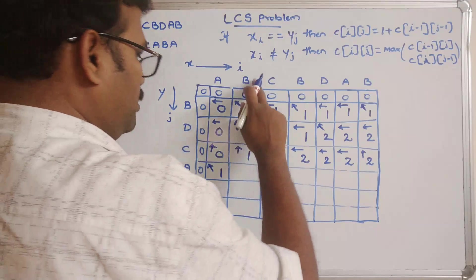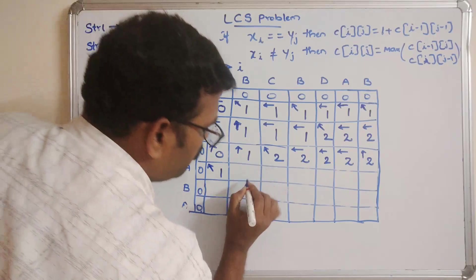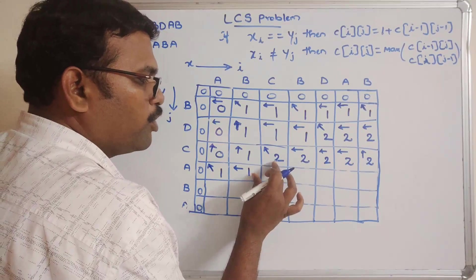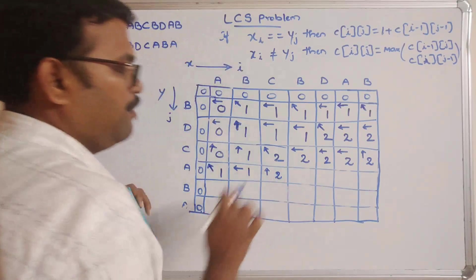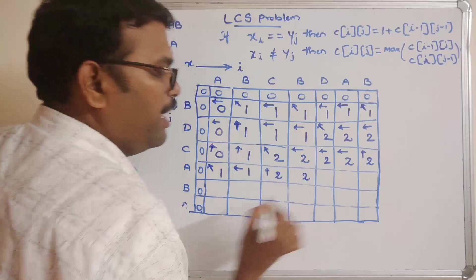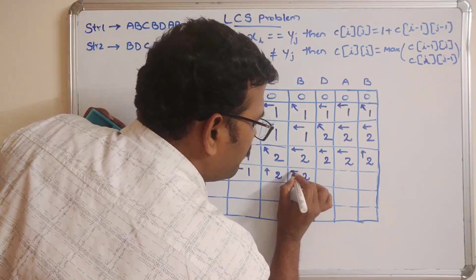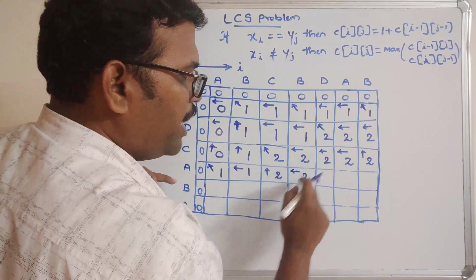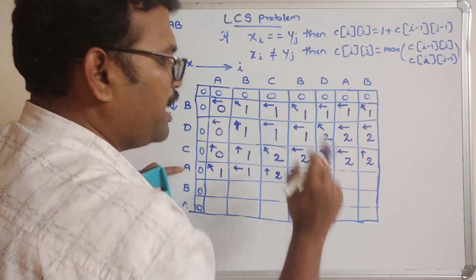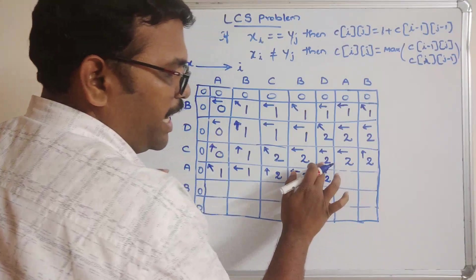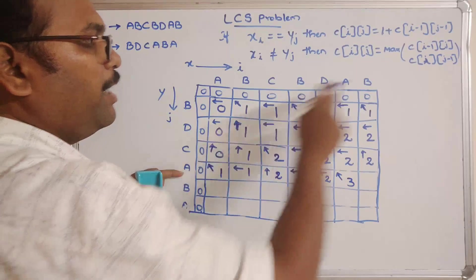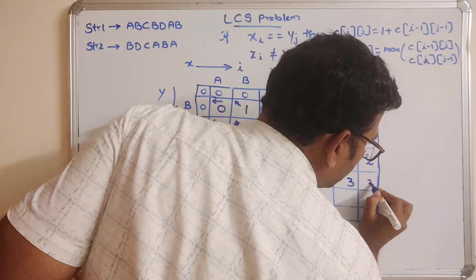A and B are unequal — one and one diagonally; both equal, we can consider any cell. A and C are unequal — one and two diagonally; maximum is two, comes from upward cell. A and B unequal — two and two; we can select either, I'll take from this cell. A and B unequal again — two and two diagonally; I consider two from this cell. A and A are equal — add one to diagonal which is two, so two becomes three; we got three from this diagonal cell. A and B unequal — maximum of two and three is three; we take three from the left cell.